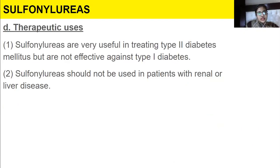Therapeutic uses: sulfonylureas are very useful in treating type 2 diabetes mellitus, but are not effective against type 1 diabetes. They should not be used in patients with renal or liver disease.